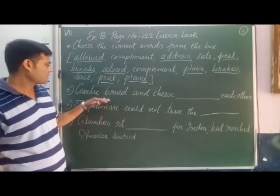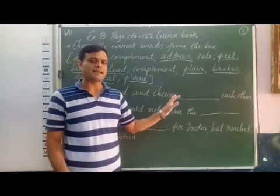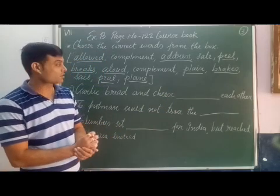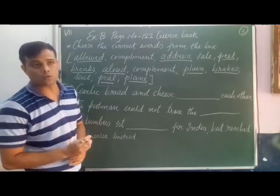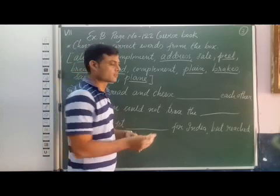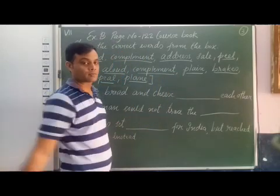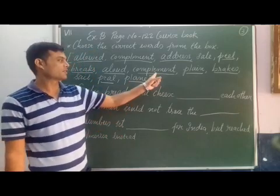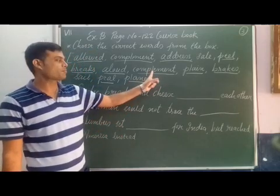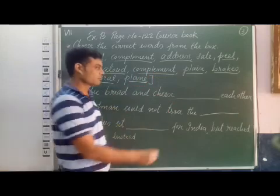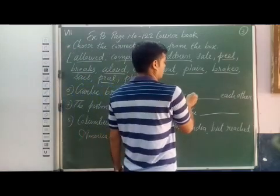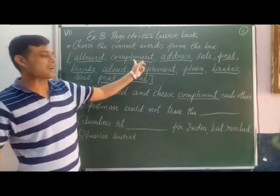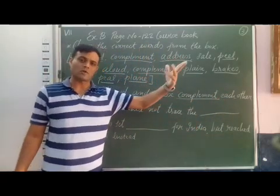Sixth blank: Garlic bread and cheese complement each other. In our box we are given two homophones — 'complement' and 'compliment.' The correct answer is 'complement,' C-O-M-P-L-E-M-E-N-T, which means to go well together or complete each other. The other 'compliment' means to praise or admire.